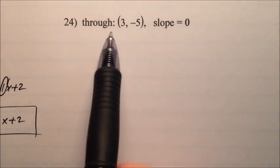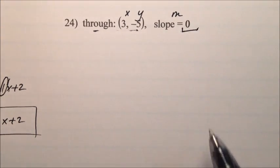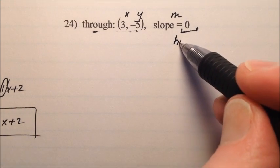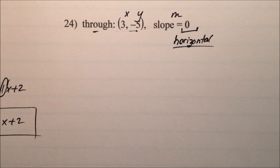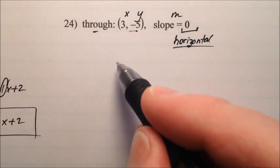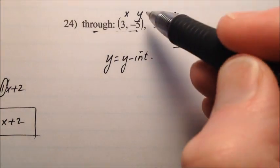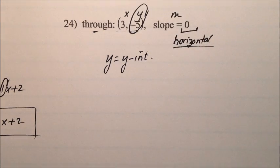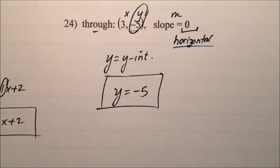In number 24, we're given a point and a slope. I notice quickly that the slope is 0. All lines whose slopes are 0 are horizontal. For horizontal lines, the equation is y equals the y value. In this case, the y value is negative 5. So this horizontal line is y equals negative 5. Number 24: slope is 0, horizontal line, y equals negative 5.